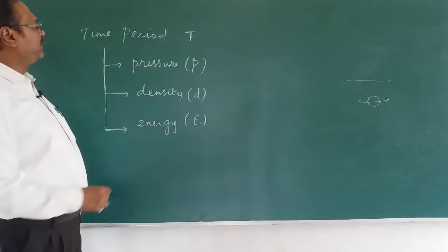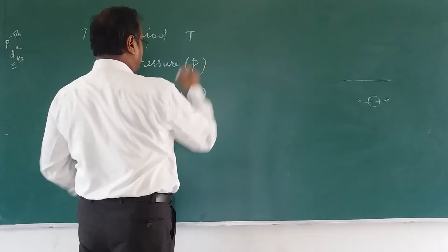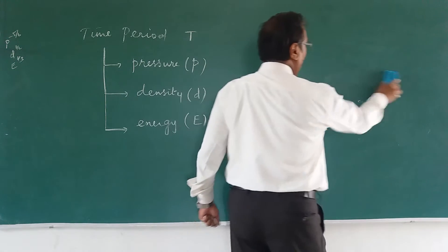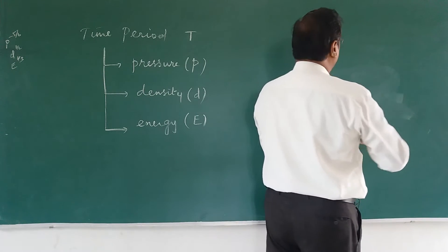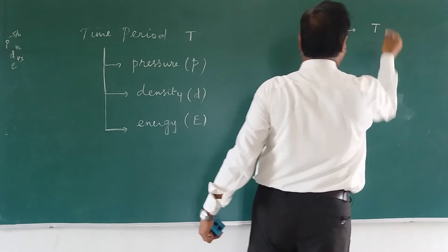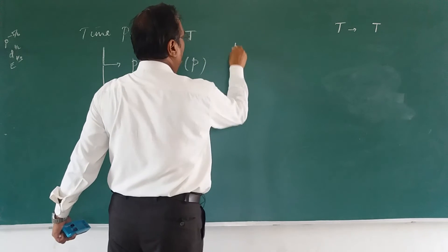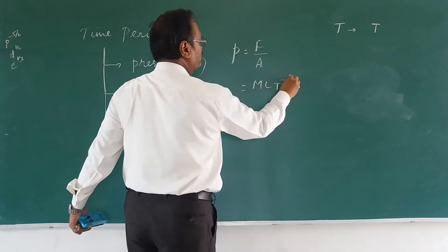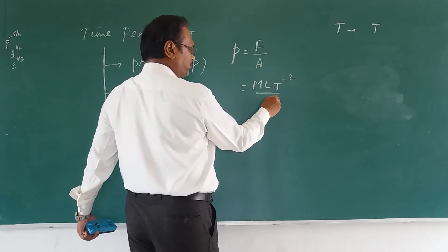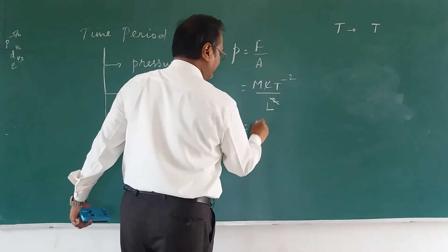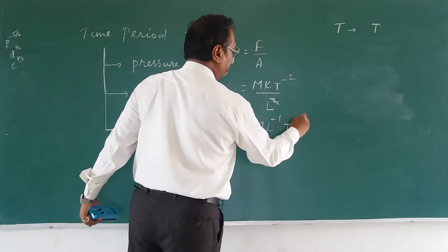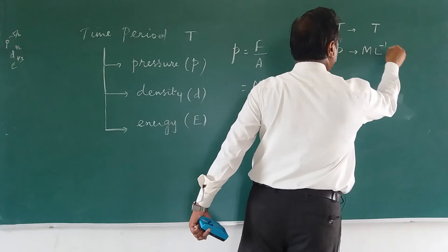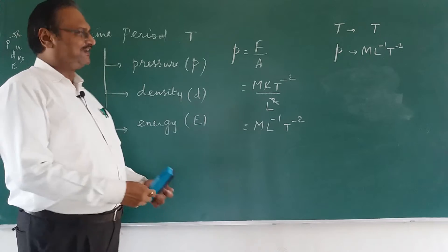We need to know the dimension for each quantity. Time period T: dimension is T power 1. Pressure: pressure is force upon area. Force is M L T power minus 2, area is L squared, so pressure becomes M L power minus 1 T power minus 2. We have to be very careful while taking the dimensional formula.